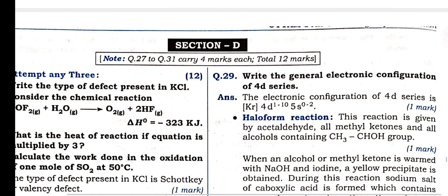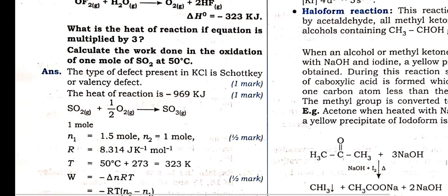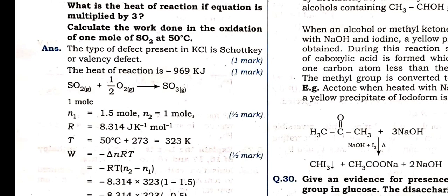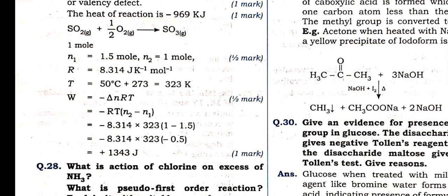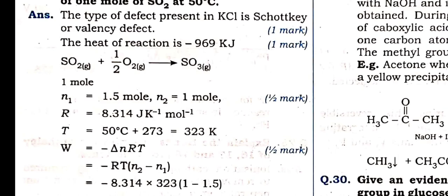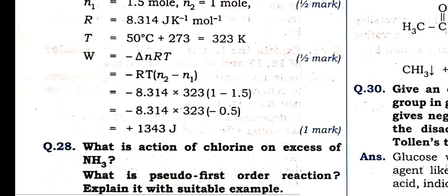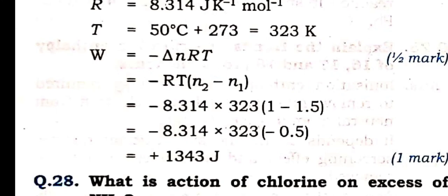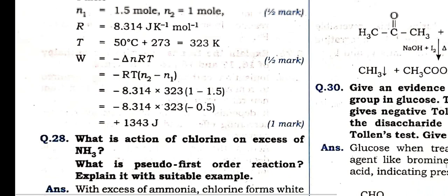Last question — Section D. Which type of defect is present in KCl? That is the Schottky defect. Heat of reaction has been given. Number of moles: 1 mole of SO₂ and 0.5 mole O₂ — total 1.5 moles reactant and 1 mole product. W = −ΔN·RT. Chemical work done in thermodynamics: W = −ΔN·RT. In this way we can find the work done — chemical work done in thermodynamics. Heat of reaction multiplied by 3: this will be multiplied by 3.